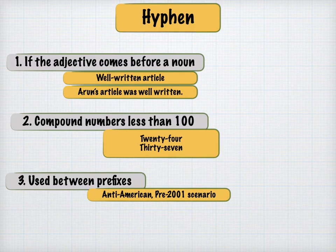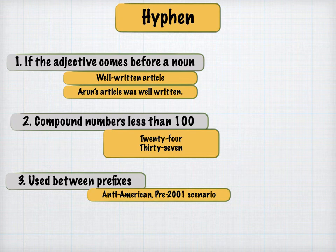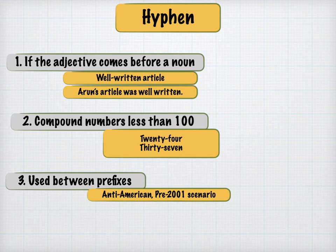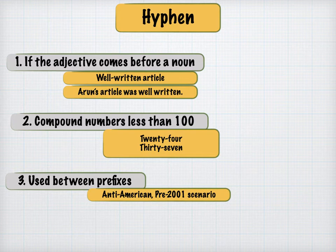Moving on to hyphen. A hyphen is used when an adjective comes before a noun. For example, 'well-written article' — the adjective 'well-written' comes before the noun 'article,' so a hyphen is used. But 'Arun's article was well written' uses no hyphen because the adjective follows the noun. The second situation is compound numbers less than 100, like 24, 37, 48. Hyphens are also used between prefixes such as anti-American, pre-2000, post-COVID, etc.